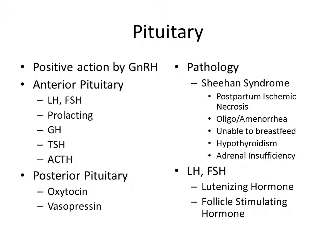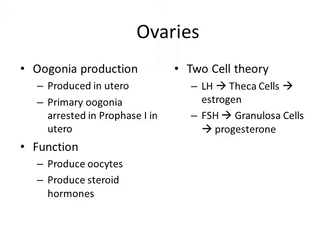LH and FSH are released by the pituitary and act on the ovaries. The ovaries are responsible for making oocytes — as we know from embryology, a woman's oocytes are all produced before she's born and arrested in prophase I. Meiosis II doesn't resume until ovulation is triggered. The ovaries produce steroid hormones estrogen and progesterone. The two-cell theory states that LH acts on the theca cells to produce estrogen, and FSH acts on the granulosa cells to produce progesterone.